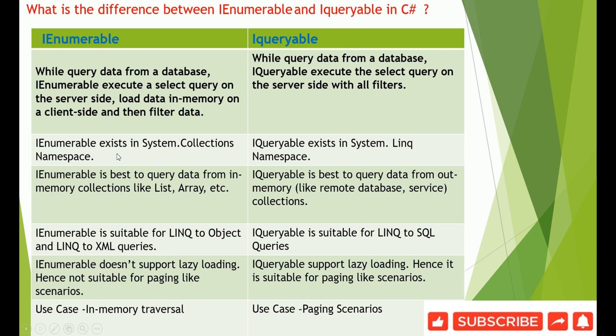Apart from that, IEnumerable exists in the System.Collections namespace, whereas IQueryable exists in the System.Linq namespace. IEnumerable is used to query data from in-memory collections like List and Array. Whenever there are in-memory collections, IEnumerable is a good fit.